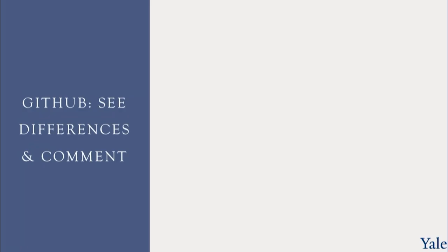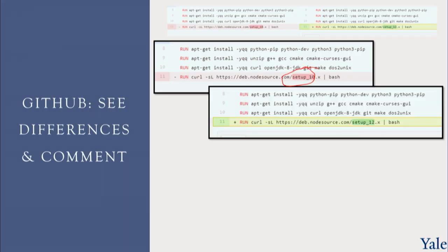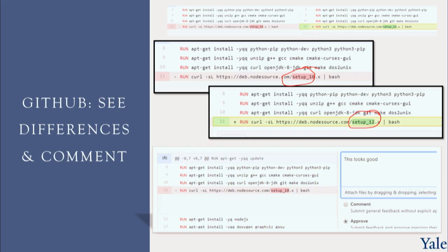Let's look at a worked example of how this works in practice. Let's say we have issued a pull request — a request for changes, for review. We can see, in the red and green highlighting, what changed in the code. For example, the original had the word setup 10, and the change became setup 12. You can see what changed in the code, put them side by side, and submit either a comment or an approval. Here the reviewer said 'this looks good' because the code was reviewed and looks fine.